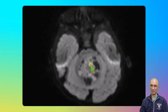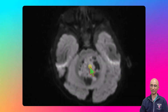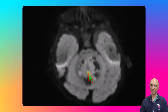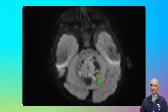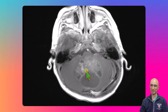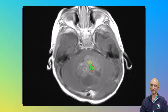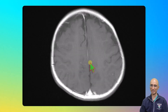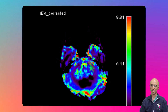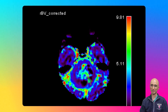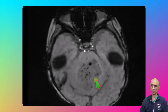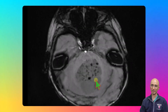On the DWI sequences we can clearly see restricted diffusion within the solid portions of this lesion. Again we can identify the multiple peripheral cystic foci. Following administration of intravenous contrast, there were patchy regions of enhancement in the solid portions of the tumor. There were no metastatic lesions identified. Perfusion imaging demonstrated increased tumoral vascularity in the solid portions, and SWI images demonstrated multiple internal foci of susceptibility suggestive of microhemorrhages.